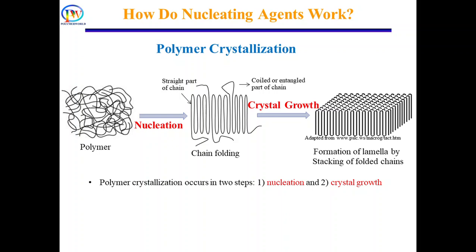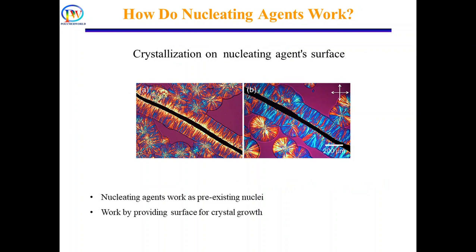Nucleation is a very crucial step — a nucleus doesn't form unless it is thermodynamically favorable. The rate of crystallinity of a polymer depends on the formation of nuclei. But when we add nucleating agents, we don't need to worry about the nucleation step, because nucleating agents work as pre-existing nuclei. The nucleating agent provides a surface to start crystal growth. As a result, the polymer begins to crystallize at a higher temperature, since crystallization starts much earlier than in the pure polymer melt, thus increasing the rate of crystallization.